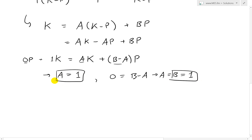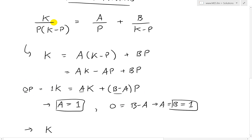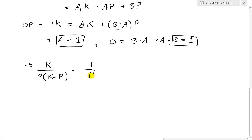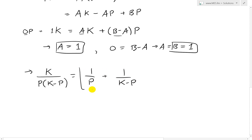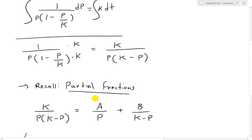So this means our expression K over p(K minus p) simplifies to 1 over p plus 1 over (K minus p). This is simpler, and we can actually take the integral of it pretty straightforwardly. So the integrand 1 over p(1 minus p/K) simplifies to 1/p plus 1/(K minus p).